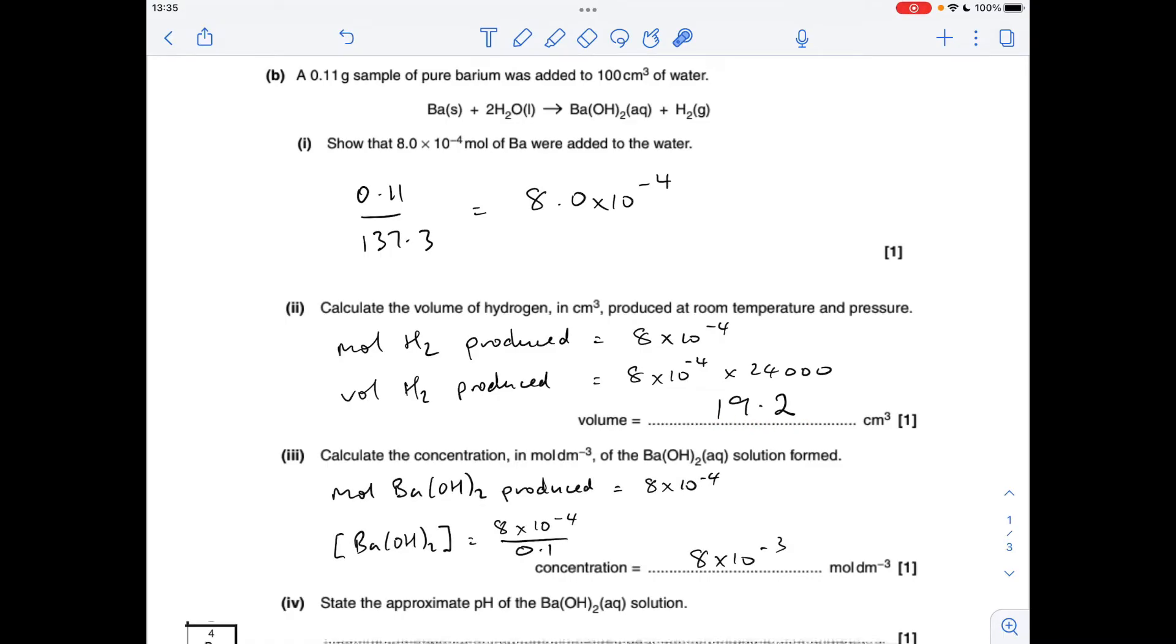Next part, the concentration of the barium hydroxide formed. Well, again, we're still going to get the same number of moles of barium hydroxide formed, and its concentration will be the moles divided by the volume they're in. They're in 100 cm cubed, which is 0.1 decimeters cubed. So we get that for the concentration, 8 times 10 to the minus 3.